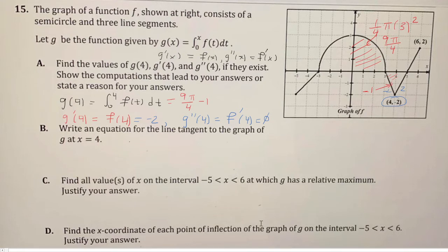Now for part b, we write an equation of the tangent line to the graph of g at x equals 4. So for a tangent line, you want a point and a slope. They give us the point x equals 4, and we want g of 4, because we're writing the tangent line for g. g of 4 was given to us, or we solved for it up here. That was 9 pi over 4 minus 1. And then the slope is the derivative at x equals 4, which we solved for negative 2.